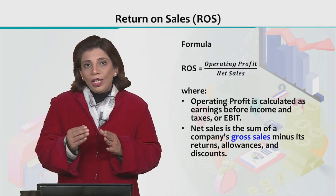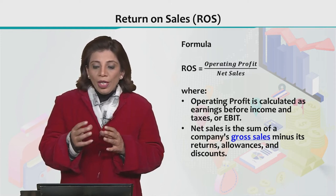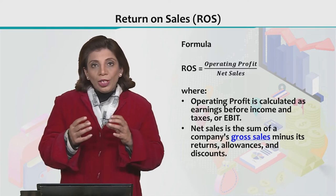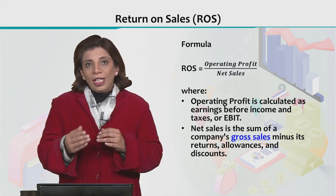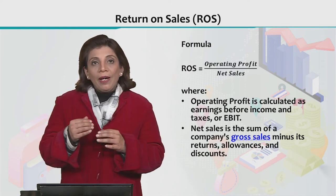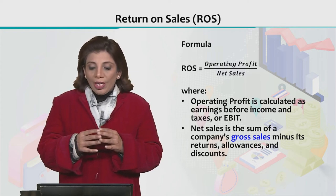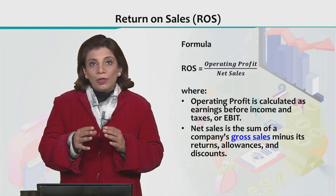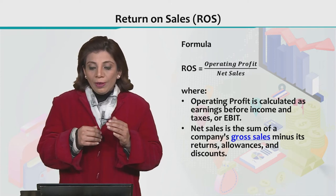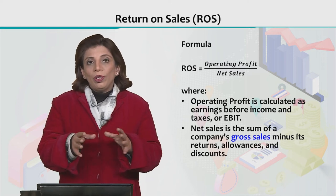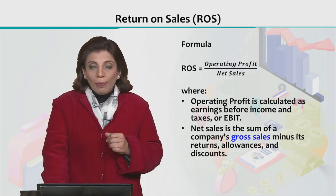The term in the numerator, operating profit, is basically earnings before interest and tax — in short form, EBIT. For the denominator, we consider net sales, which is basically the sum of a company's gross sales minus its returns, allowances, and discounts. Any allowances or returns given to concerned parties are subtracted from gross sales to arrive at net sales.